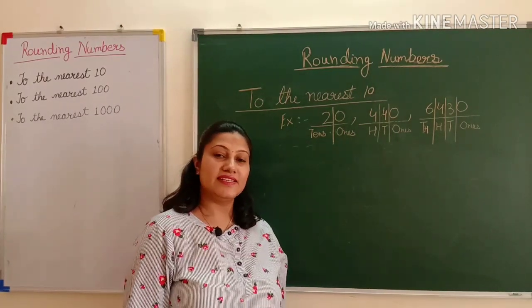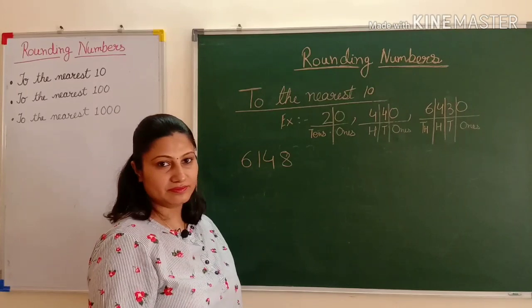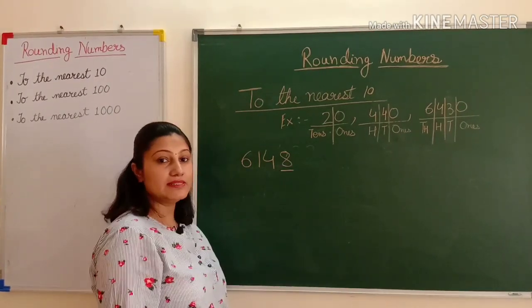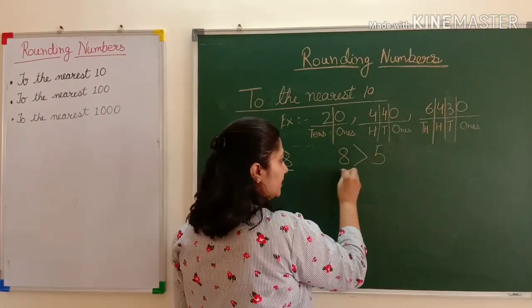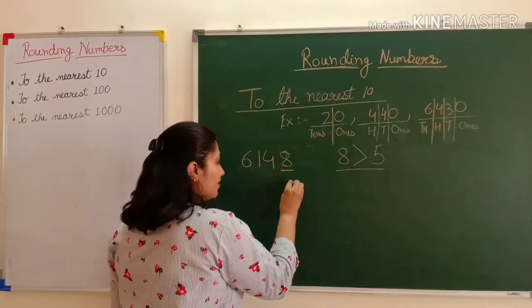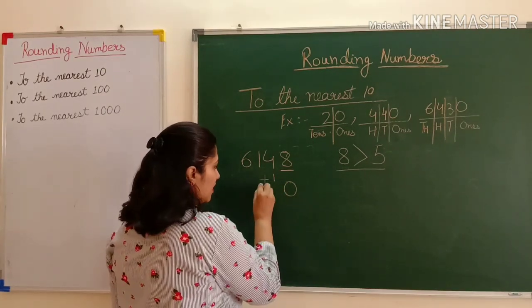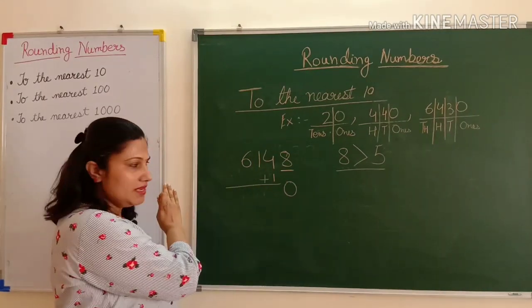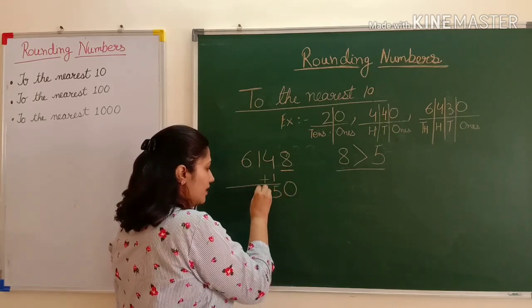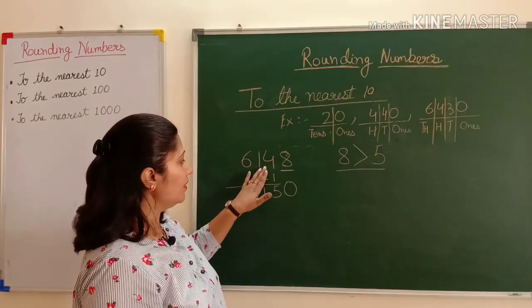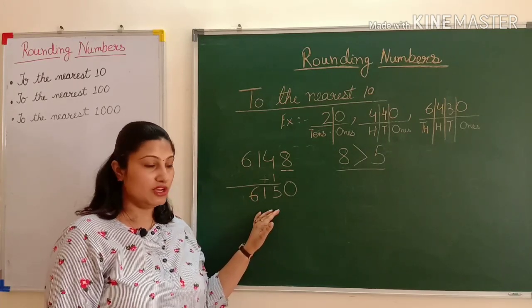Let's take a four-digit number: 6148. In the ones place the digit is 8. I compare 8 with 5 — 8 is greater than 5. So I put zero in the ones place and add one to the tens place: 4 plus 1 becomes 5. I do not change any other digits. So when I round off 6148 to the nearest ten, the number is 6150.